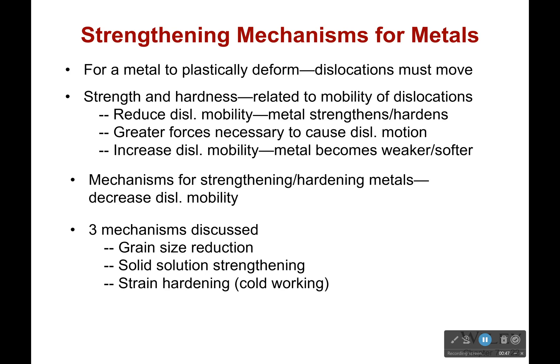One is to reduce the grain size — that means even if there's a particular grain that has the right direction, it's a small one so there's not much slip. Two, solid solution strengthening, where we add another material, like putting carbon into steel or making bronze by mixing copper and tin together. And three, strain hardening, which is cold working it.